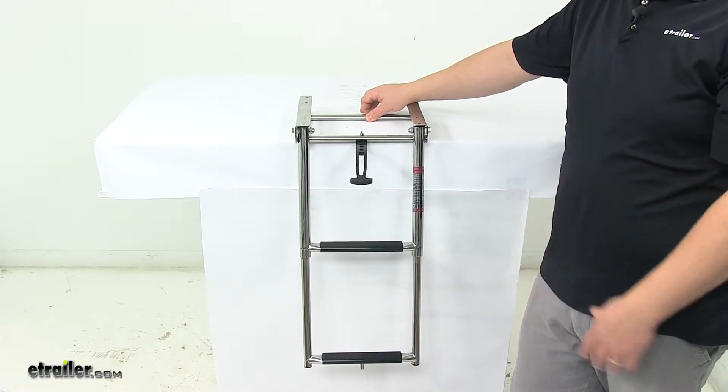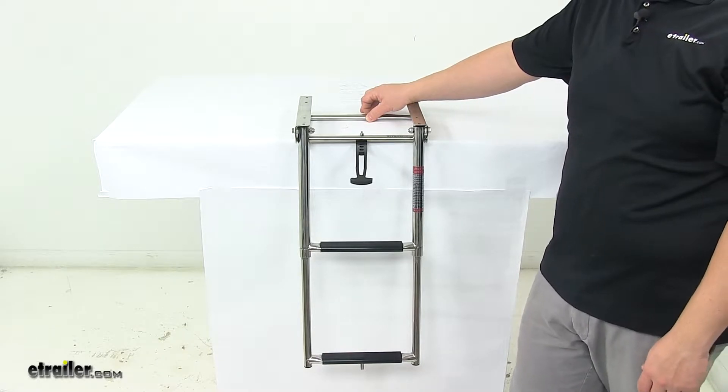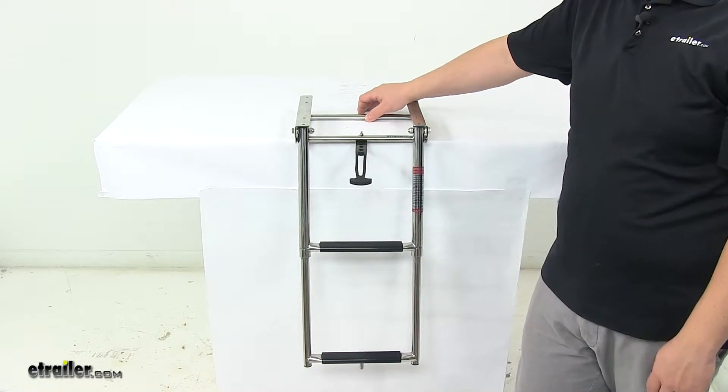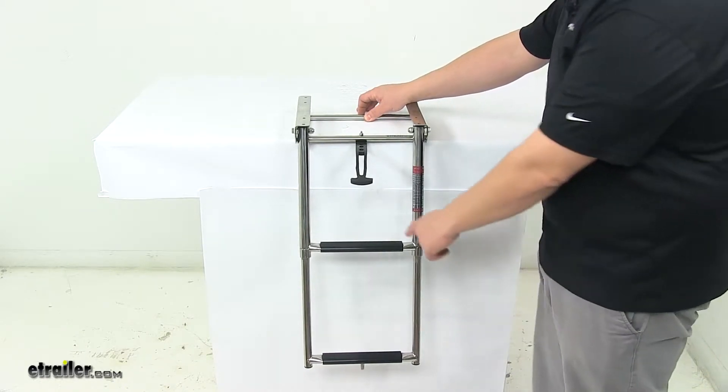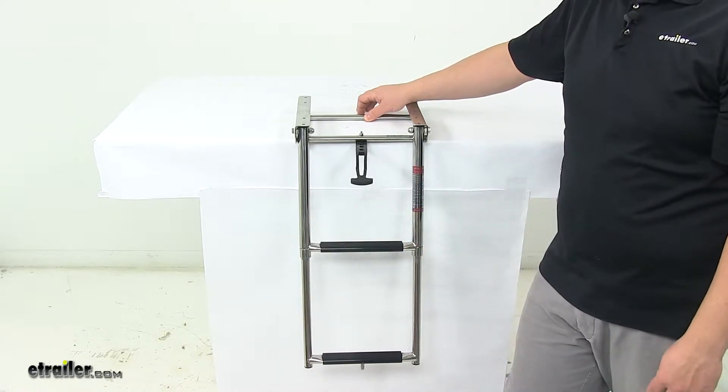When it comes to the construction, we're looking at an electro-polished 316 stainless steel. It's very strong and durable and extremely corrosion-resistant. On each rung we have a non-skid platform which ensures safe, secure footing. Each pad measures about seven and one-quarter inches long by an inch and a half deep.